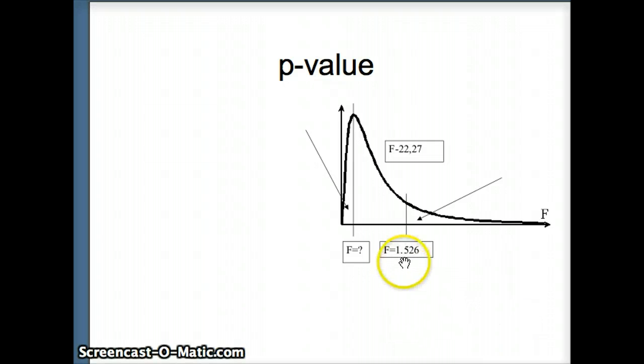So here's what we have. We have our test statistic is 1.526. We have an F 22, 27 distribution. It's a two-tailed test. So I want to find the area to the right of 1.526 and to the left of something. I don't know what that something is. I don't really care what that something is, but I just know I'm going to have to double that area to get the P value.